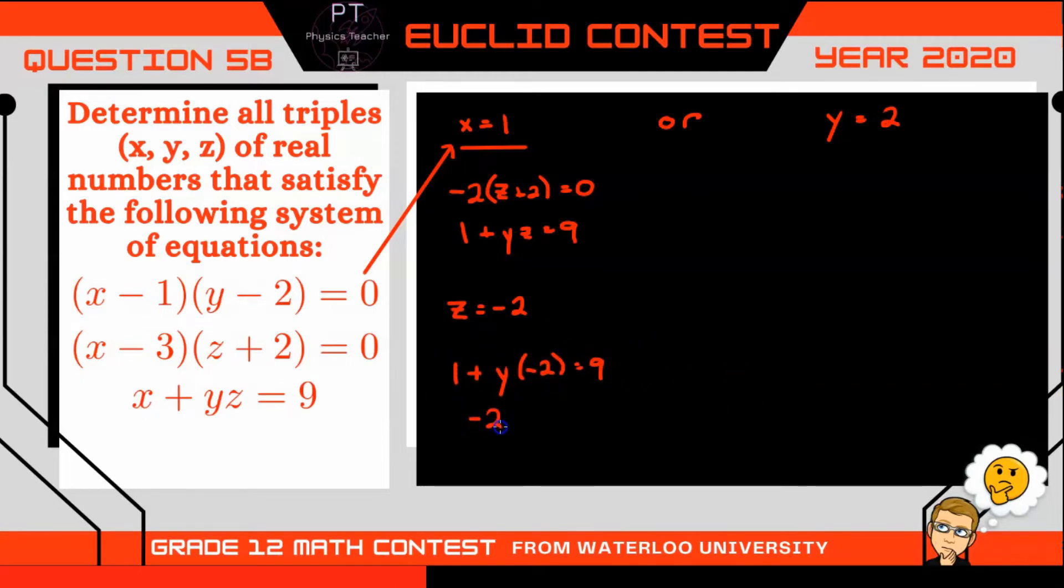So now we can solve for y. Subtract 1 from both sides, we get negative 2y is equal to 9 minus 1 which is 8, so y is therefore negative 4. So one possible solution then for (x, y, z) is (1, -4, -2).